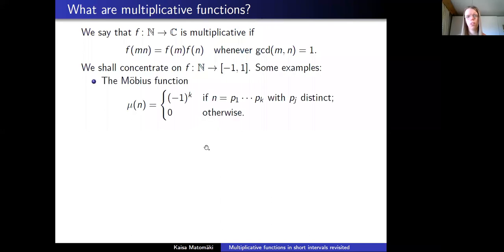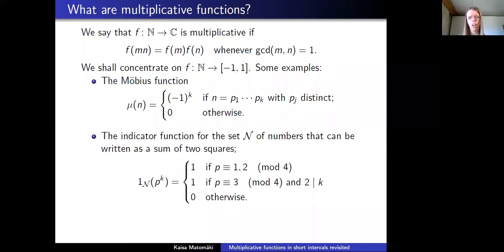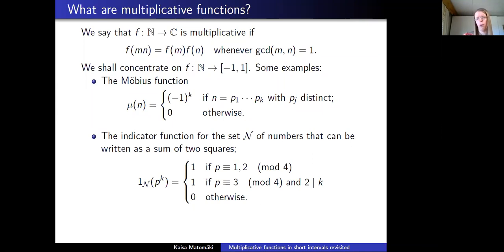I give some examples of multiplicative functions. The Möbius function is zero if n has a square factor; otherwise it's minus one if n has an odd number of distinct prime factors, and plus one if n has an even number. Another example is the indicator function of the set of numbers that can be written as a sum of two squares: it's one if p is one or two mod four, and for primes that are three mod four it's one only if the power of the prime is even.